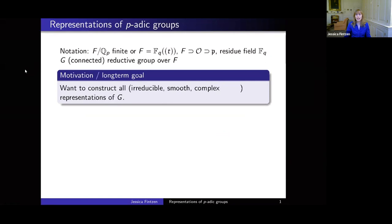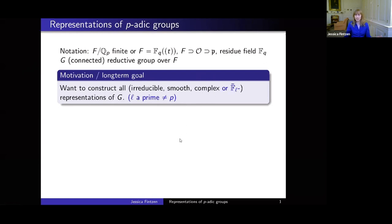I'm interested in studying representations of G, and I want to construct all the irreducible smooth complex representations of this group G. That's really a big goal that a lot of mathematicians started working on more than 50 years ago, and we are still working on it. Irreducible means only two invariant subrepresentations: the trivial one and the representation itself. I look at representations with either complex coefficients, or mod-L coefficients in the spirit of the program — modular representations as well — as long as L is a prime different from p.